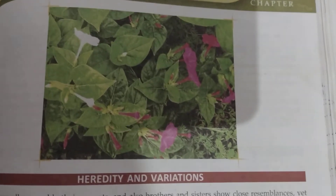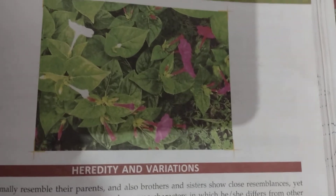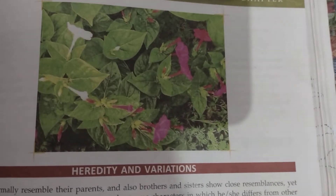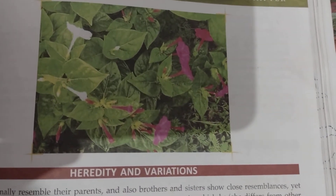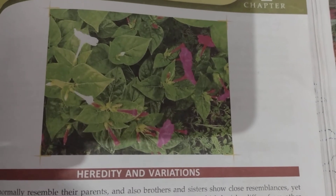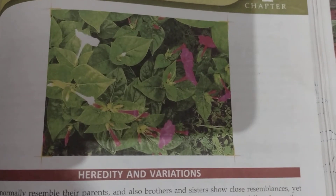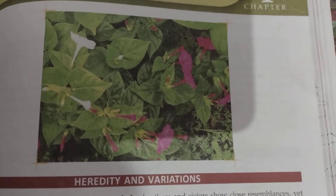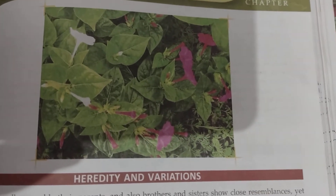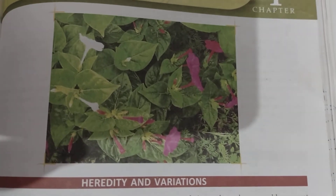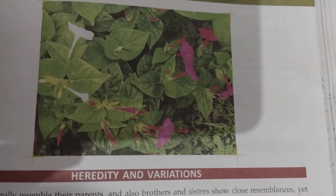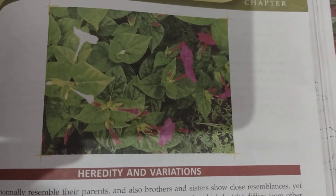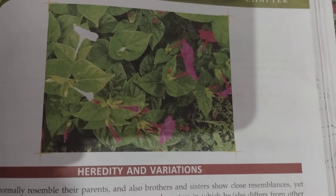How does Heredity take place? In our body, chromosomes — we can also say DNA and genes — are responsible for our character. Chromosomes are responsible for the character and genes are responsible for the character. These genes or chromosomes are made up of DNA.